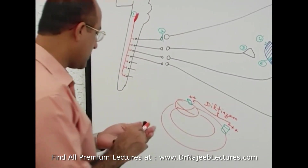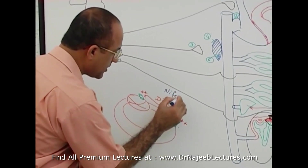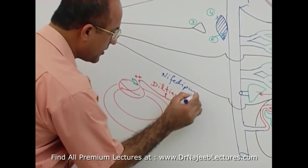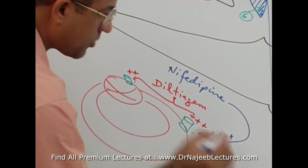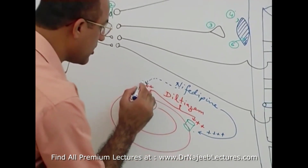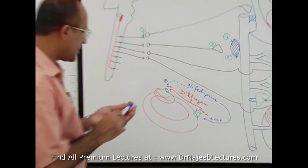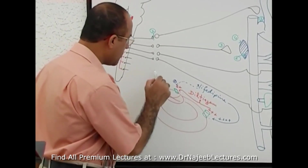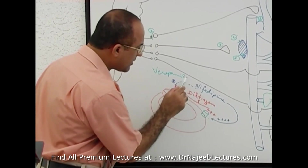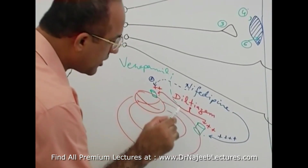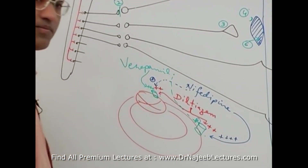Diltiazem blocks smooth muscle calcium channels and myocardial calcium channels to an equal degree. Then there are other calcium channel blockers — for example, nifedipine, which mainly blocks arterial smooth muscle and has very little action on myocardial cells. And there is verapamil, which has less action on blockage of smooth muscle but more action on blockage of calcium channels of the heart.